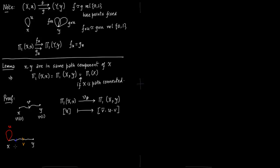The path in the opposite direction is given as v̄. So u gets mapped as follows: you first travel from y to x — that is v̄ — then you take the loop u, and then you take path v and travel back to y. That is the homomorphism we are defining, and this is well defined.